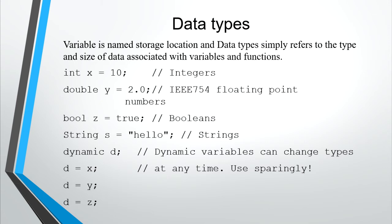In our example, X is defined as integer with a value of 10. Y is defined as double with a value of 2.0. Z is defined as boolean with a value of true. Take note, in boolean there are only two values: true or false. S is defined as string with a value of 'hello'. String variables are initialized with double quotation marks, so hello is enclosed with double quotation marks.